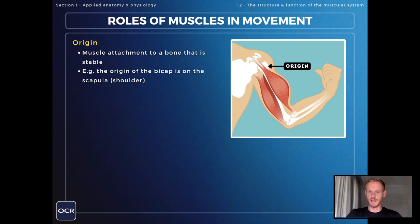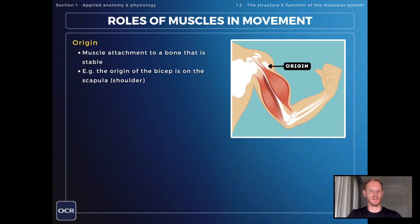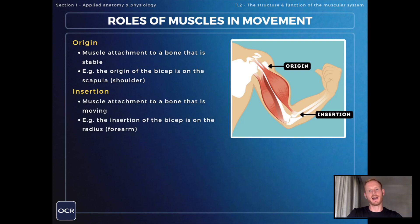The other definition you need to know is fixator. But in order to explain the role of the fixator muscle, let's first go through the terms origin and insertion. Muscles are attached to bones at both ends. The origin is the point at which a muscle attaches to a bone that is stable — in other words, it remains stationary and doesn't move when the contraction occurs. The insertion, on the other hand, is the site at which the muscle attaches to a bone that moves.